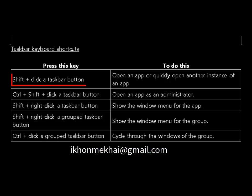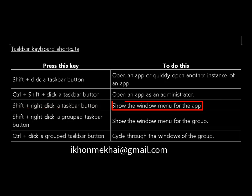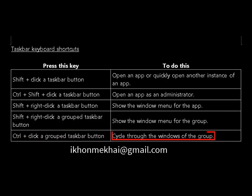Remember: Shift plus click a taskbar button will open an app or quickly open another instance of an app. Ctrl plus shift plus click a taskbar button will open an app as an administrator. Shift plus right click a taskbar button will show the window menu for the app. Shift plus right click a group taskbar button will show the window menu for the group. Ctrl plus click a group taskbar button will cycle through the windows of the group.